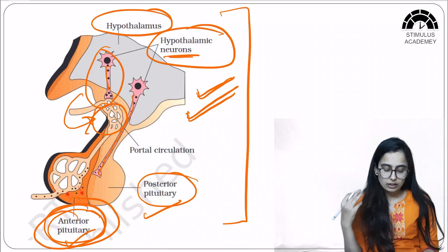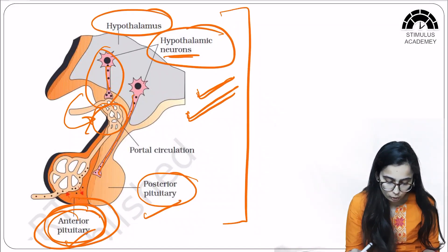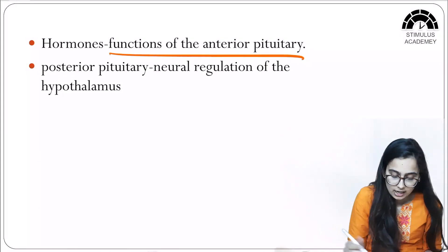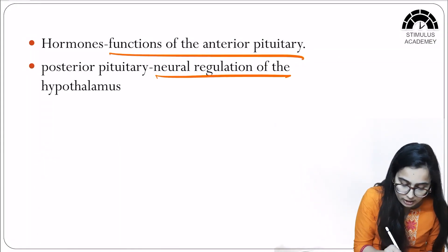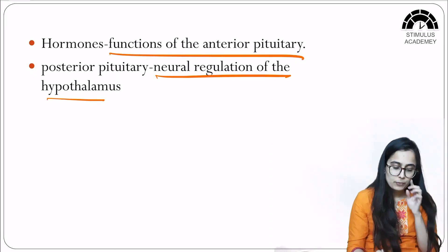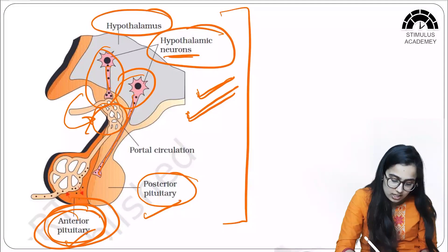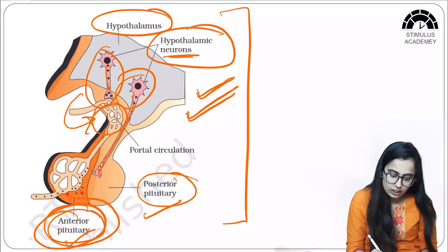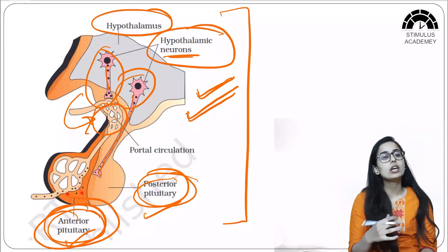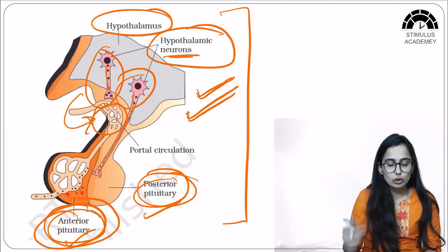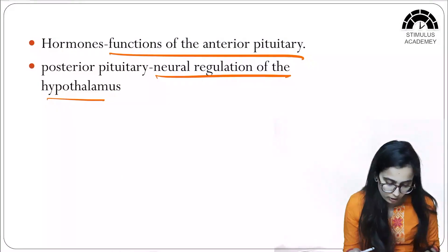The anterior pituitary is under hormonal control, while the posterior pituitary is under neural regulation. We can see that the neuron directly innervates the posterior pituitary.